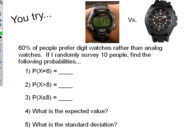All right. So 60% of people prefer digital watches. Oops. I misspelled prefer digital watches rather than analog watches. If I randomly survey 10 people, find the probabilities. All right. So let's think about this SNAP. Does it meet the condition? Success or failure? You either have a digital watch or you don't randomly survey 10 people. They're all independent of each other. If I'm randomly surveying them out, they're going to be, and the probability is, well, 60%.